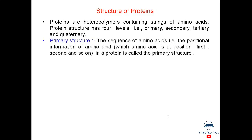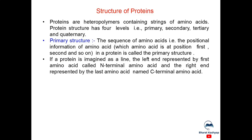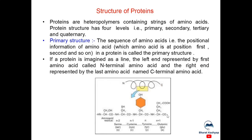Now, primary structure of protein. The sequence of amino acids that is the positional information of amino acid. In other words, which amino acid is at position first, second and so on in a protein is called the primary structure. If a protein is imagined as a line, the left end represented by first amino acid is called N-terminal amino acid and the right end represented by the last amino acid named C-terminal amino acid.